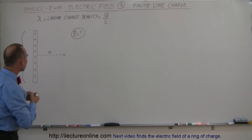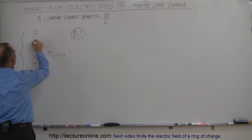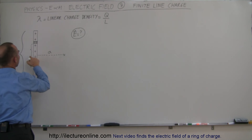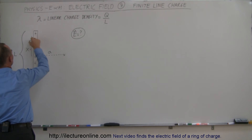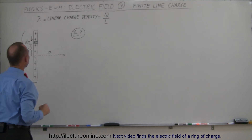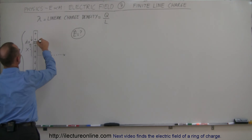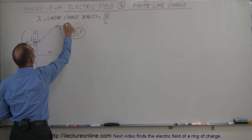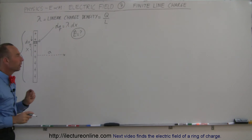The next thing we're going to do is pick a small segment. There's an infinitesimally small segment at a distance x away from the midpoint, and the length of that segment is dx. The amount of charge on that little line segment, called dq, would simply be equal to the linear charge density times the length of that segment dx.